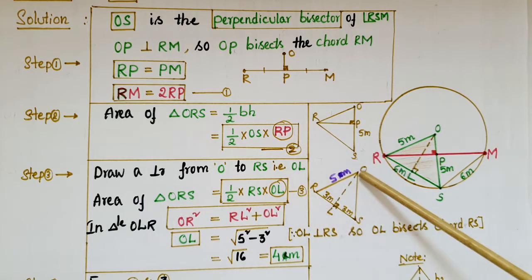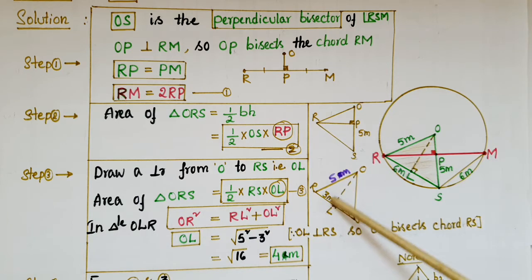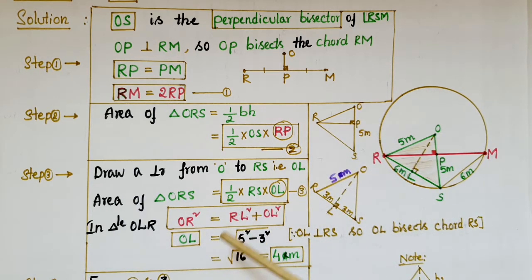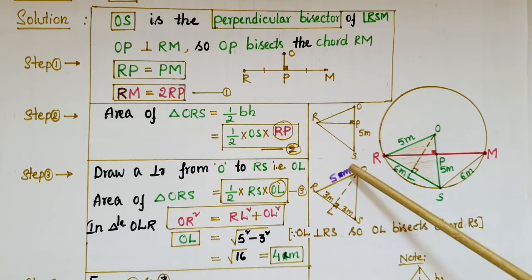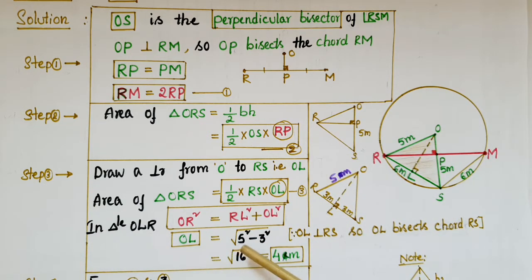OL can be calculated using the Pythagorean theorem. In right triangle OLS, OR is the hypotenuse. So OR² equals RL² plus OL², giving OL² equals OR² minus RL². Therefore OL equals the square root of (5² minus 3²), which is the square root of (25 minus 9), which is the square root of 16, which equals 4 meters.